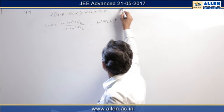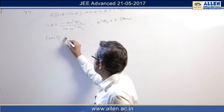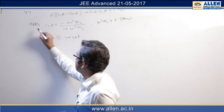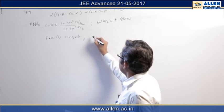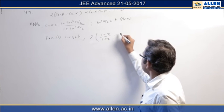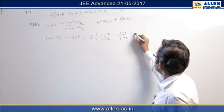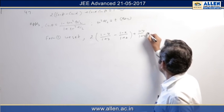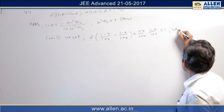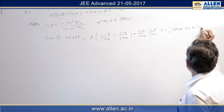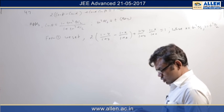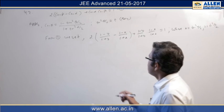So from 1 we get 2 times 1 minus y upon 1 plus y minus 1 minus x upon 1 plus x plus 1 minus y upon 1 plus y times x upon 1 plus x equal to 1, where x equal to tan square alpha by 2, y equal to tan square beta by 2.